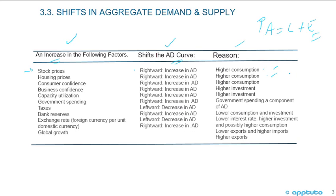The same logic applies to consumer confidence — higher confidence means higher consumption, so a rightward shift. Higher business confidence leads to higher investment, also a rightward shift. Higher capacity utilization is a rightward shift — increase in aggregate demand due to higher investment. Increased government spending is also a rightward shift because government spending is a direct component of aggregate demand.